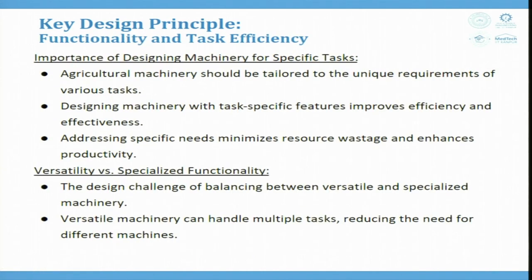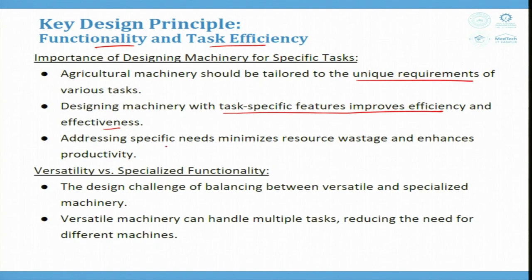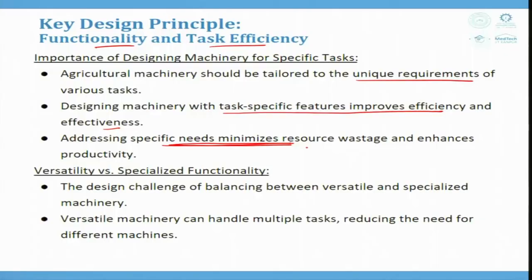Functionality and task efficiency: agriculture machinery should be tailored to the unique requirements of various tasks. Designing machinery with task-specific features improves efficiency and effectiveness. Addressing specific needs minimizes resource wastage and enhances productivity. For example, an AMLA grater was developed — AMLA has a seed at the center and pulp around it, so grating it to get maximum pulp yield and deseed it is a specific challenge.